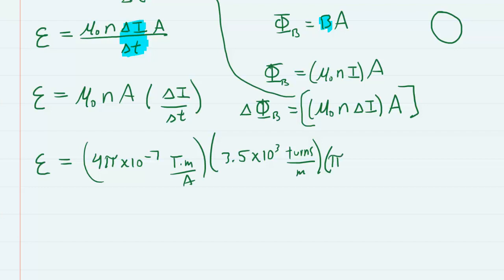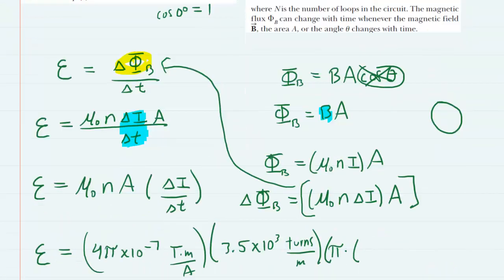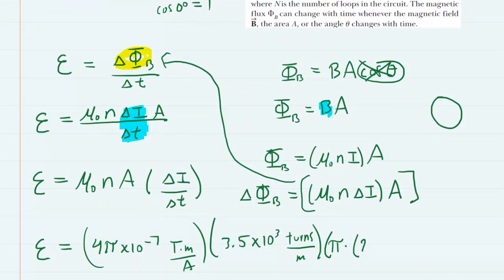So we do π times the radius squared. Now the radius was 2 centimeters, so we need to convert that into meters. We'll do 2 times 10 to the minus 2 meters, and then don't forget to square it.